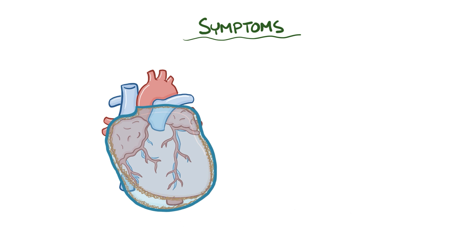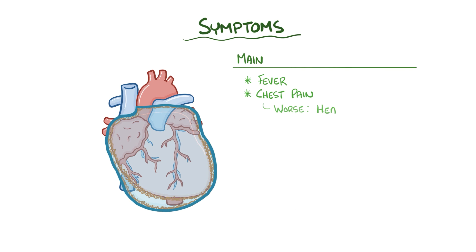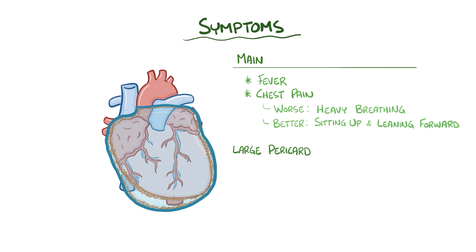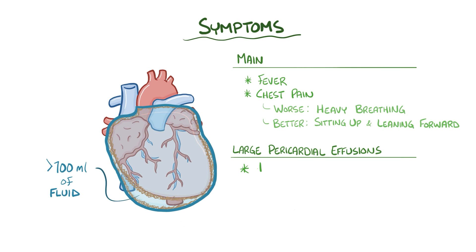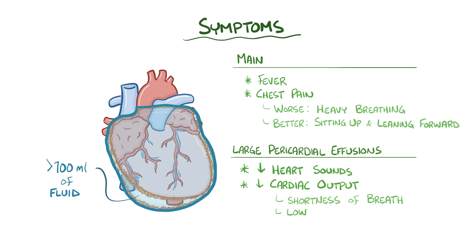The main symptoms of pericarditis are fever and chest pain that worsens with deep breathing but improves with sitting up and leaning forward. Larger pericardial effusions — those over 100 milliliters — can cause diminished heart sounds and diminished cardiac output, leading to shortness of breath, low blood pressure, and lightheadedness.